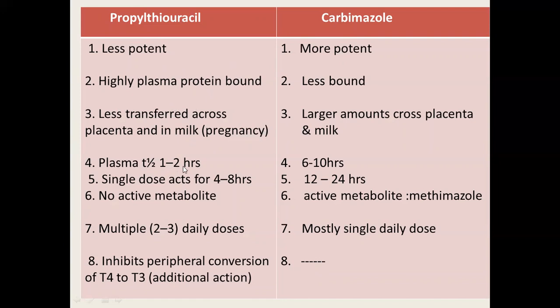The plasma half-life of propylthiouracil is one to two hours, while carbamazole's is six to ten hours. A single dose of propylthiouracil acts for only four to eight hours, whereas a single dose of carbamazole acts for twelve to twenty-four hours. Propylthiouracil has no active metabolite; methimazole does have an active metabolite. Therefore, propylthiouracil requires multiple daily doses, while carbamazole can be given as a single daily dose. Additionally, propylthiouracil inhibits peripheral conversion of T4 to T3.